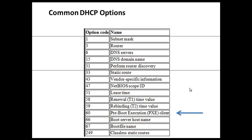Hello everyone. In our previous session, we talked about the DHCP role on the network and we said that the DHCP is responsible for giving out IP addresses to clients on the network so that those clients can communicate.